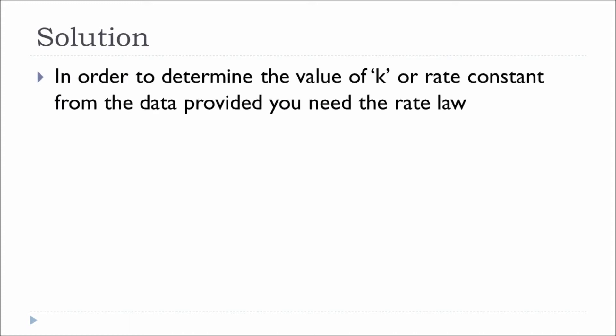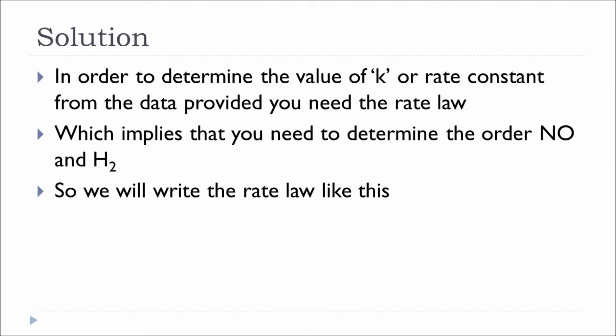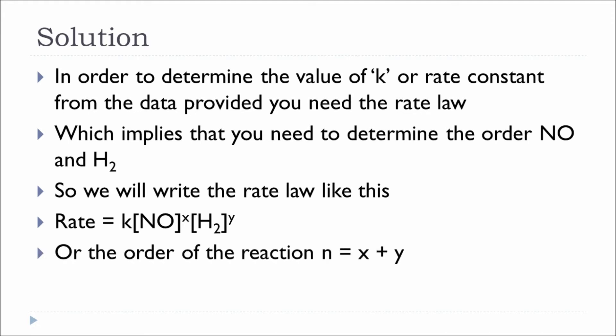To determine the value of k, the rate constant, we need to write the rate law. To write the rate law, we need the order of each reactant. So we write the rate law in a generic form: Rate = k × [NO]^x × [H₂]^y, where k is the specific rate constant, x is the order of nitric oxide, and y is the order of hydrogen. The overall order N equals x + y.